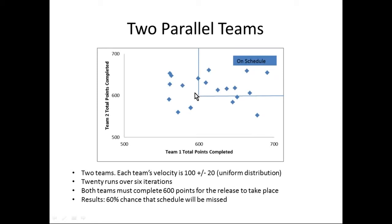This demonstrates the problems with the standard approach, which would say we'll complete 600 points on both teams and be on schedule — when in fact there's a 60% chance the schedule will be missed. What's really powerful about Monte Carlo is that we know this on day one, before the project starts. We can make a much better decision about whether to invest in it. Using the standard approach, you'd basically have to watch the situation unfold over several iterations before discovering the team isn't finishing 100 story points per sprint — spending a lot of money before making any strategic decision.